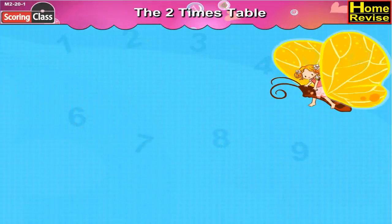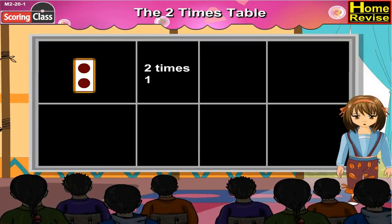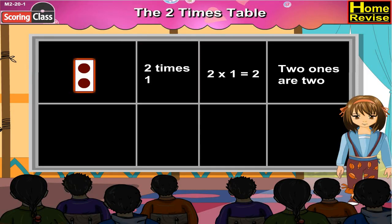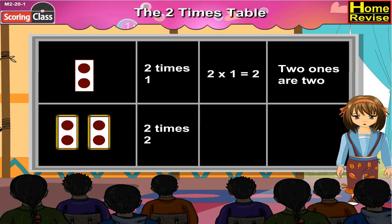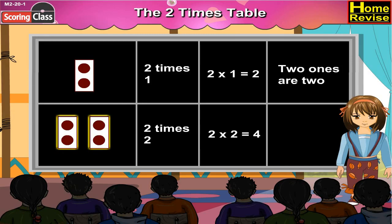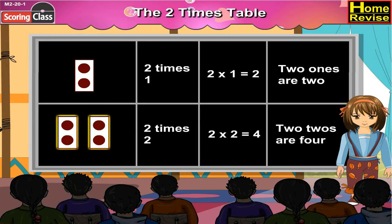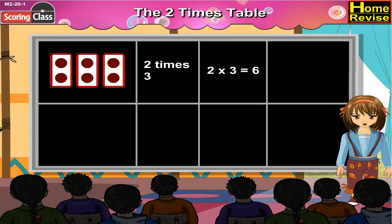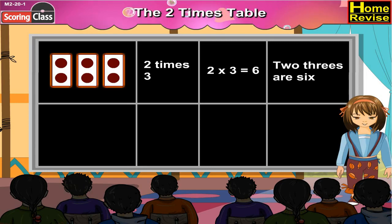The 2 times table. 2 times 1, that is 2 multiplied by 1, is equal to 2, and we say it as 2 ones are 2. 2 times 2, that is 2 multiplied by 2, is equal to 4. 2 twos are 4. 2 times 3, which means 2 x 3, is equal to 6, and we call it as 2 threes are 6.